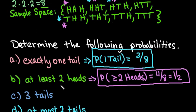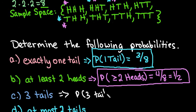Three tails only happens once. So the probability of three tails is one out of eight, because the only time it happens is if I get all three tails.